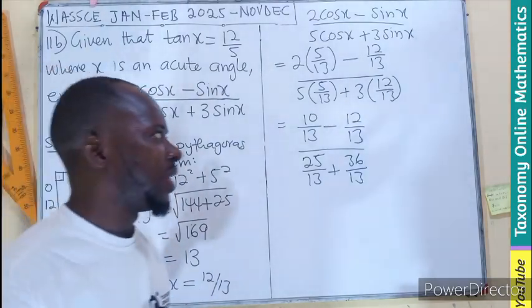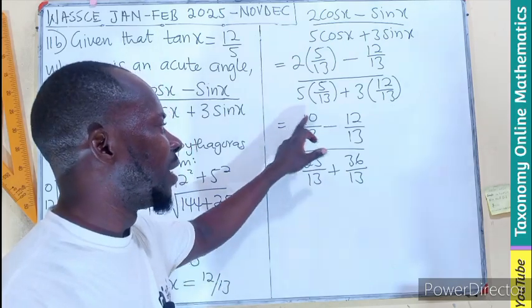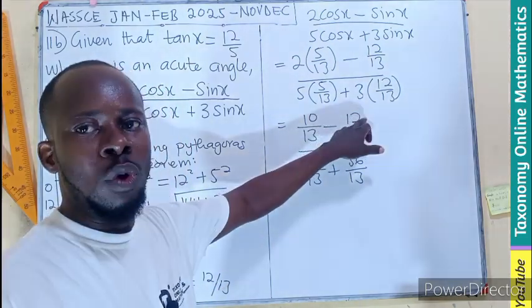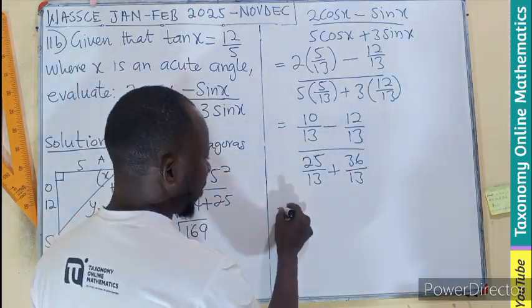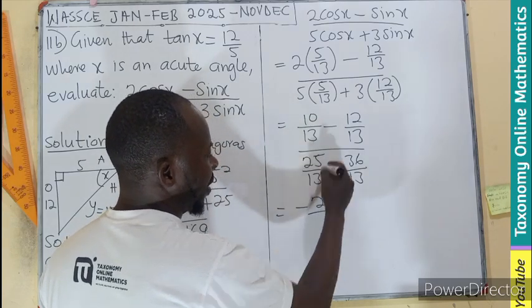Remember, like fractions, when you have the same denominators, you will print only the numerators, meaning 10 minus 12. That would give us a minus 2 divided by 13.